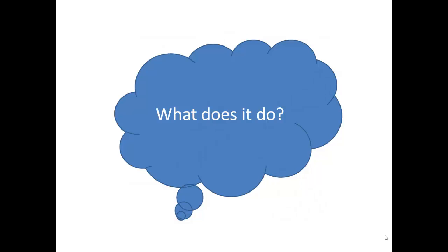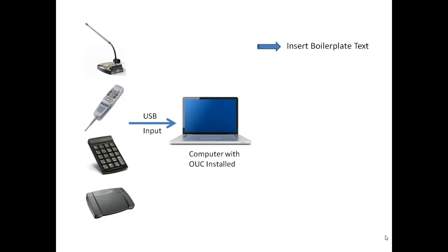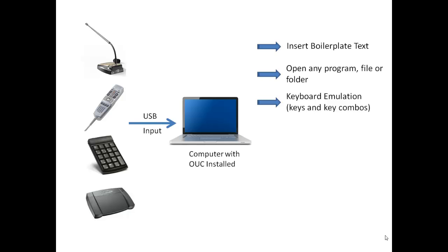Now, what does it do? Regardless of the device, USB input from your human interface device to your computer is sensed by OUC and turned into immediate action — like inserting boilerplate text, opening any application, document, folder, or web page, or emulating any keyboard key or key combination.